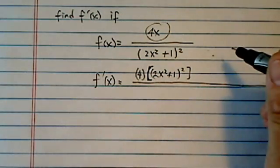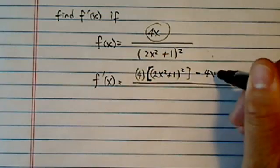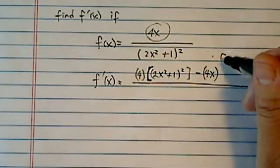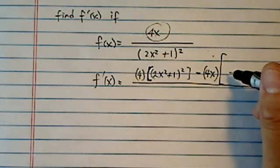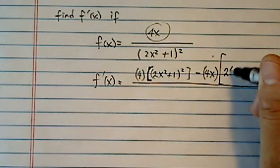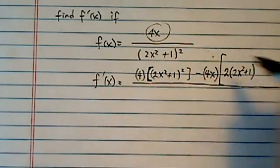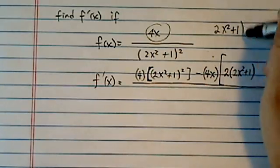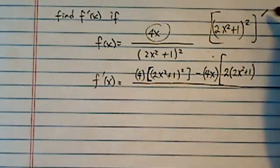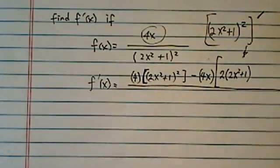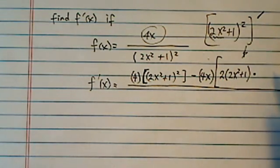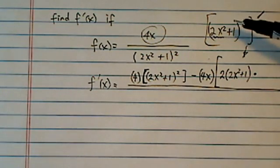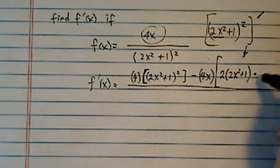The second part is a little messy, but it doesn't have to be hard. You're going to leave the first part alone, which is the 4x. Then you're going to take derivative of the second one on the bottom, which you're going to have to use power rule first. So it's 2 times 2x squared plus 1, and then multiply derivative of this chunk. The derivative of the 2x squared is 4x.